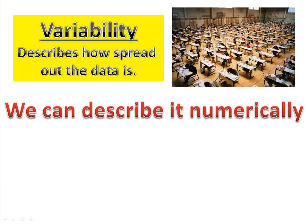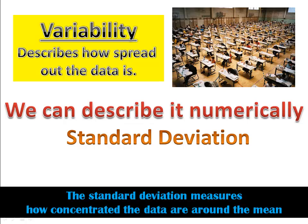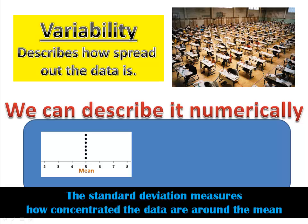The reality is we can describe it numerically using what's called the standard deviation. Standard deviation simply measures how concentrated the data are around the mean. Take a look at these two pictures. In this first picture, we see that all of the data points are right at 5, which is the mean. These points are all concentrated around the mean. They're very close to it.